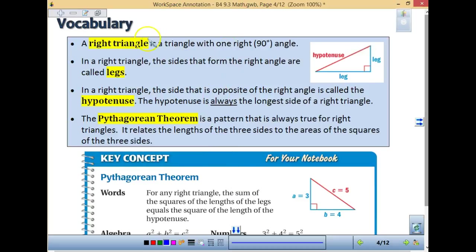So we're going to go through a little more vocabulary. A right triangle, as we said earlier, is a triangle with one right angle. In a right triangle, the sides that come off the angle, those are called our legs of our right triangle. In a right triangle, the opposite, the side that's opposite the right angle, is called the hypotenuse. And it is always, always, always the longest side.